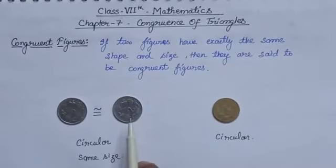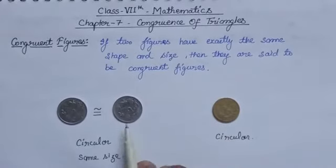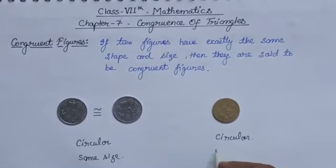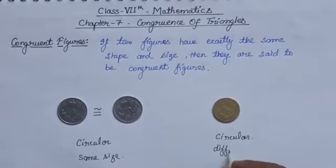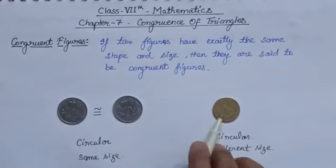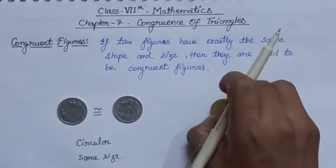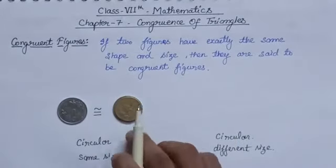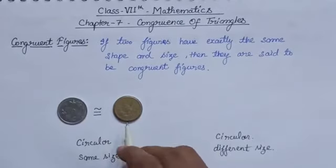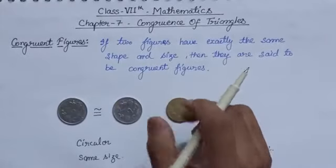If we talk about one 2-rupee coin and one 5-rupee coin, then you can see that these two coins have the same shape, that is circular. But their sizes are not the same. Hence, we can say these two coins have different sizes. So we cannot say the 2-rupee coin is congruent to the 5-rupee coin. Because when we place this 5-rupee coin over the 2-rupee coin, these two coins cannot cover each other exactly. Hence, these two coins are not congruent.